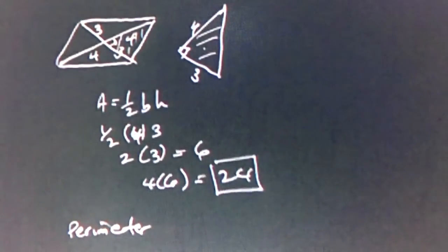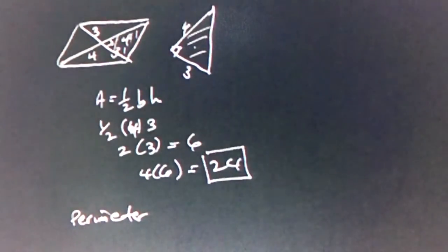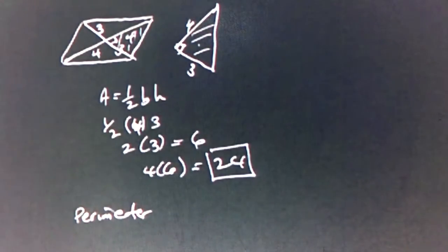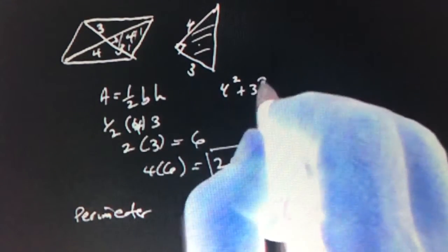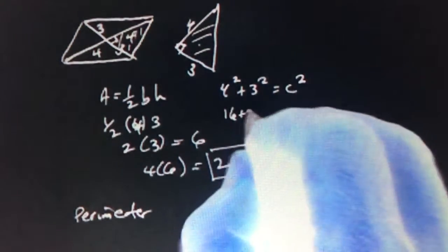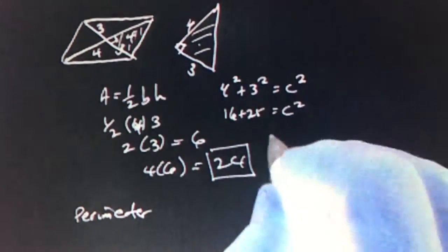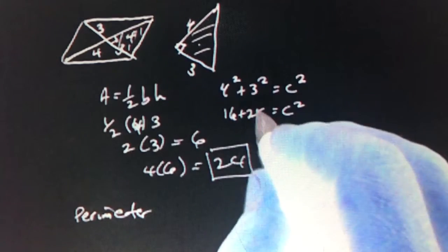You would need the length of a side. So in this case, the length of the side is found by the Pythagorean theorem. It's 4 squared plus 3 squared equals C squared. And that would be 16 plus 25 equals C squared. C squared equals 16 plus 9. My bad. I'm sorry.